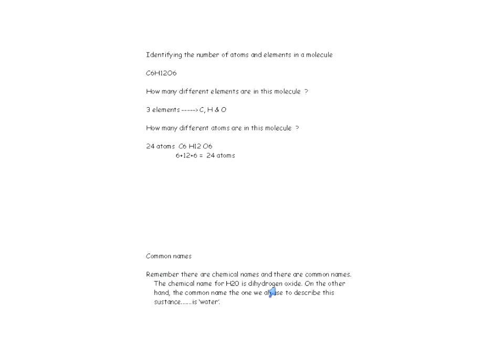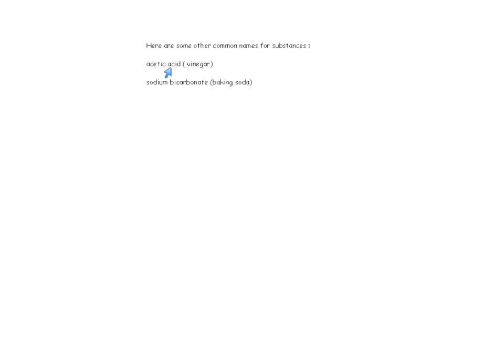When talking about common versus chemical names: the chemical name for H2O is dihydrogen oxide, but the common name is water. Other examples include acetic acid, whose common name is vinegar, and sodium bicarbonate, whose common name is baking soda.